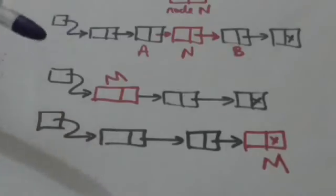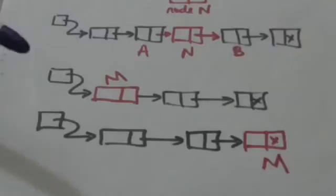If the node M which we have inserted in the linked list is the first node in the linked list, then the list pointer variable of the linked list will point to node M. And if node M is the last node in the linked list, then node M will contain a null pointer.